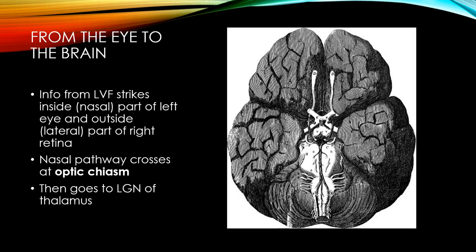And the opposite from the right visual field: information or light from the right visual field is reflected to the left part, or the medial part, or the nasal part — close to your nose — of your right eye, and the left part or the outer part of your left eye. So information goes from one half of the world to the opposite side of both eyes.